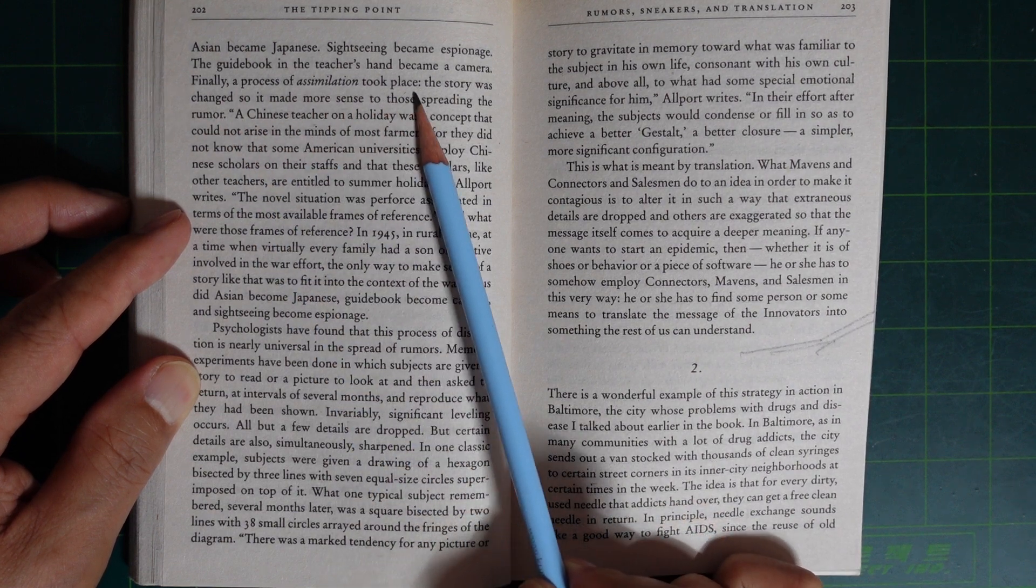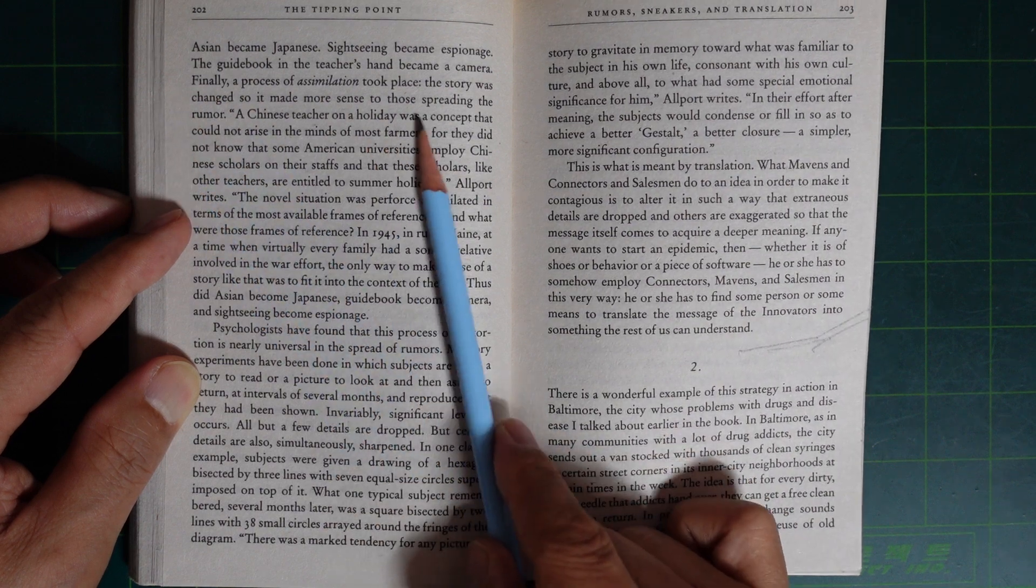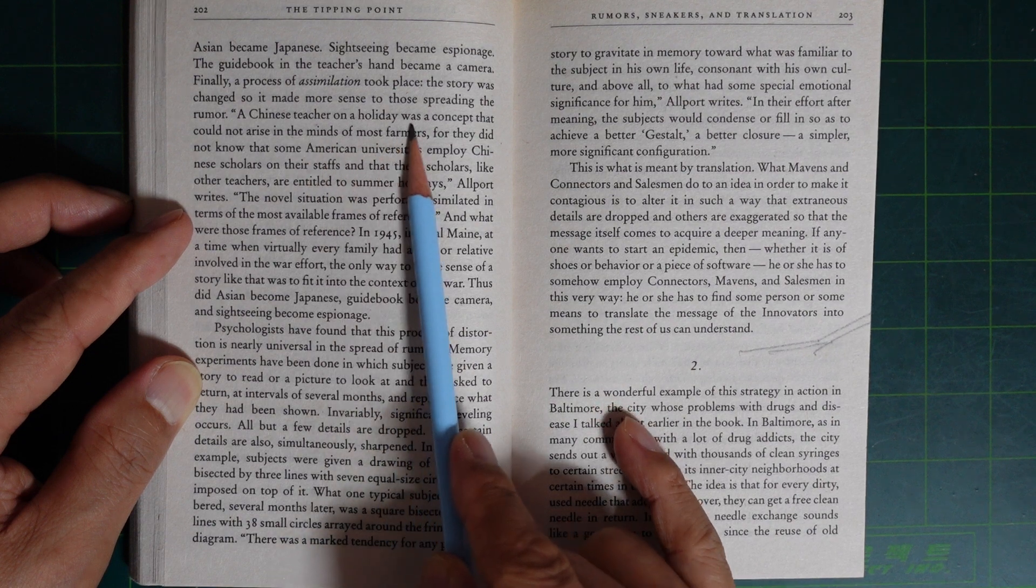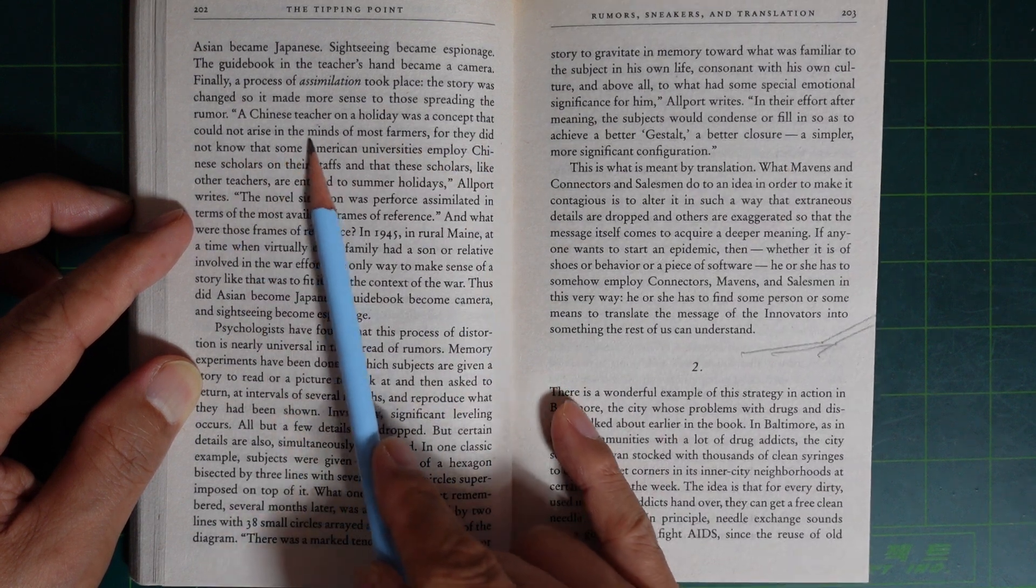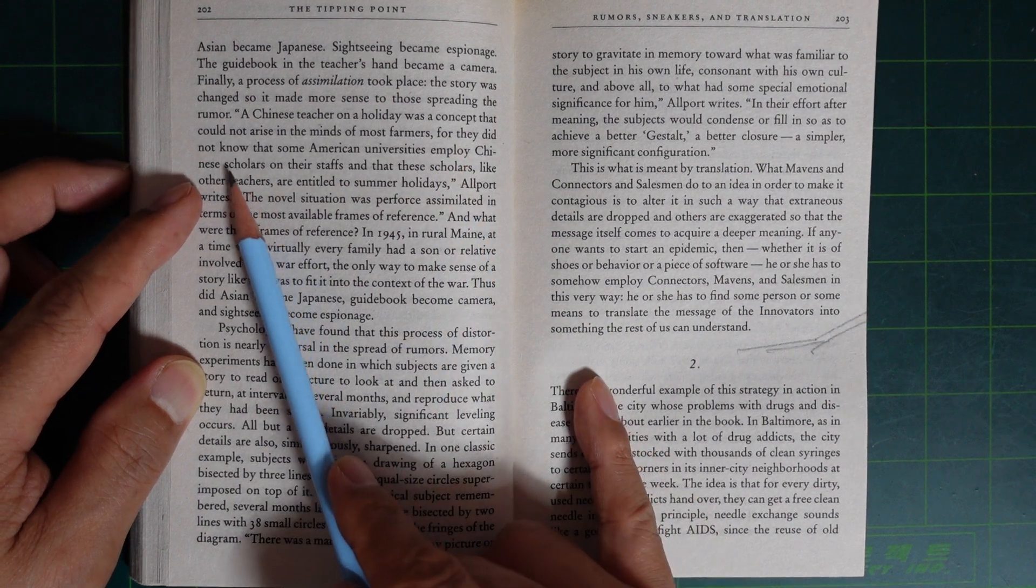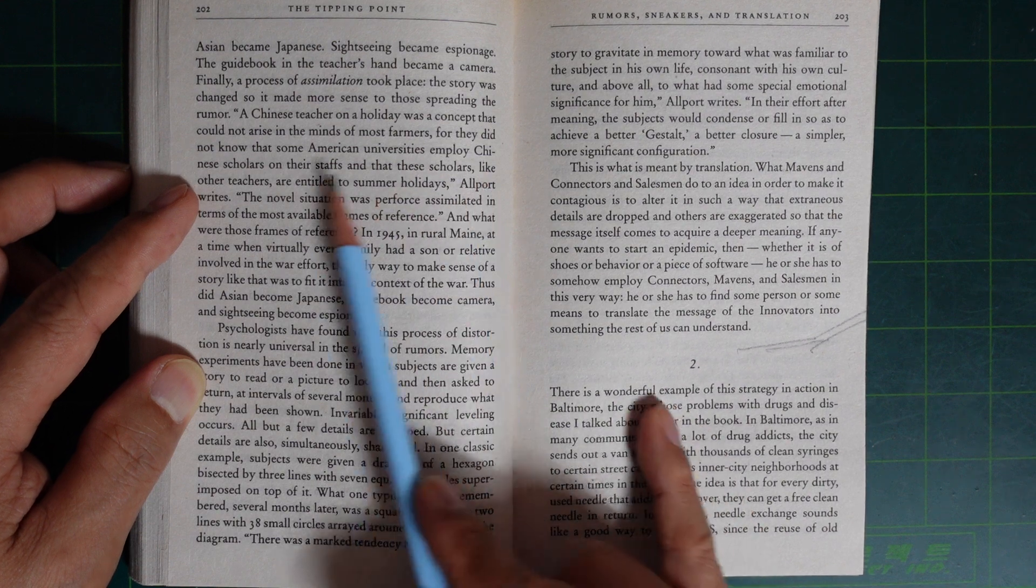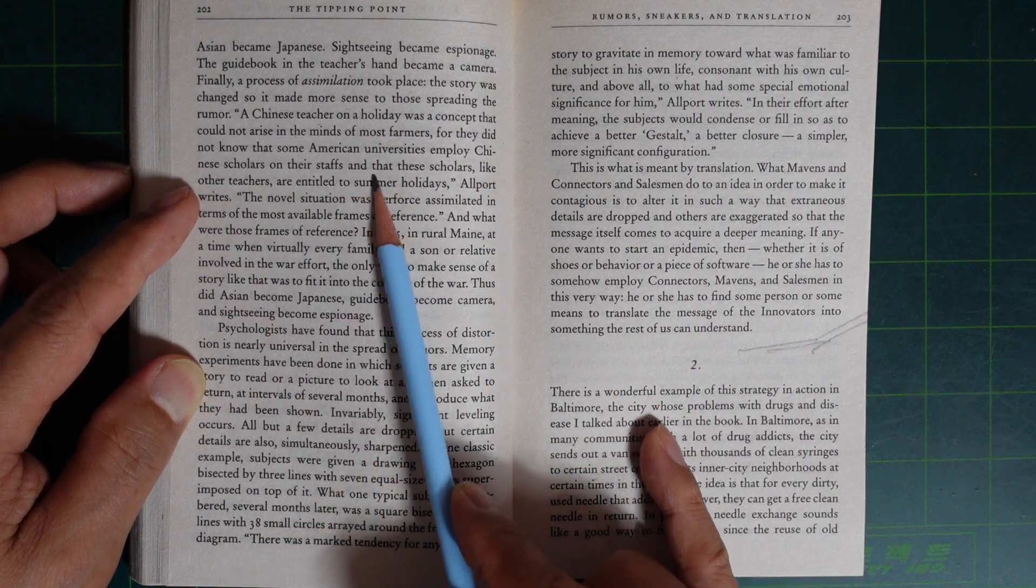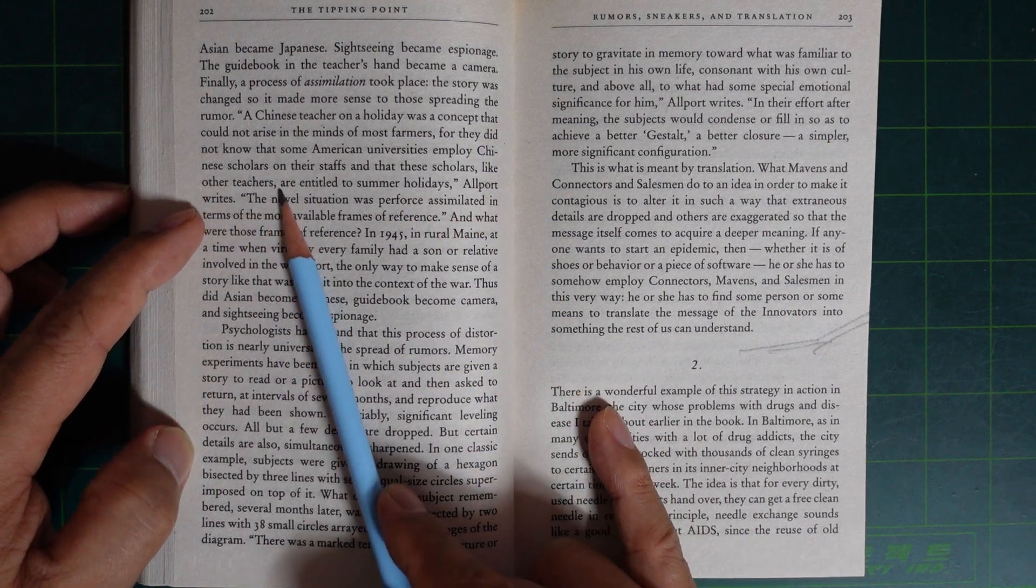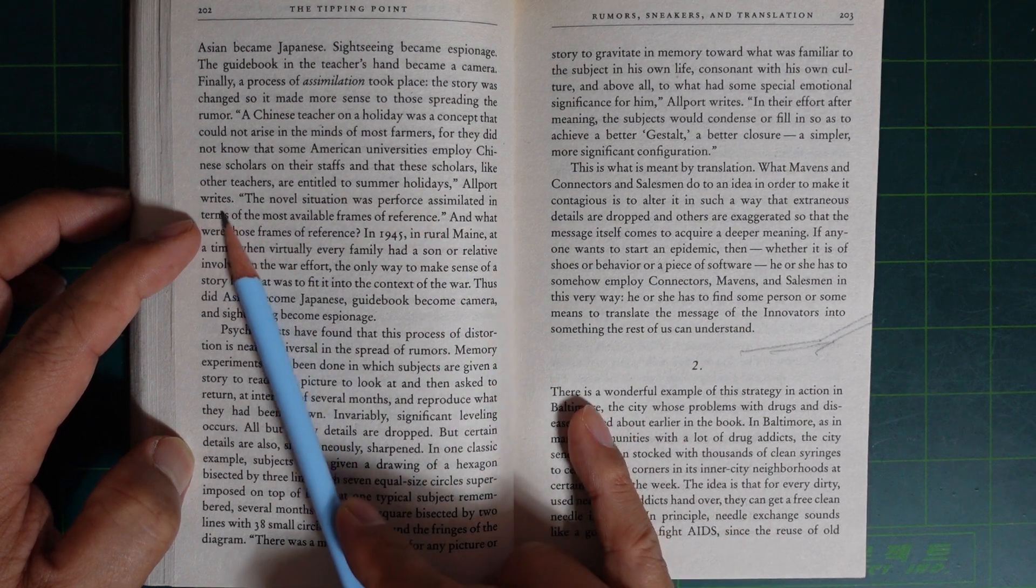Finally, a process of assimilation took place. The story was changed so it made more sense to those spreading the rumor. A Chinese teacher on holiday was a concept that could not arise in the minds of most farmers, for they did not know that some American universities employ Chinese scholars on their staffs, and that these scholars, like other teachers, are entitled to summer holidays. Allport writes,